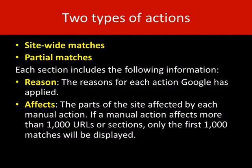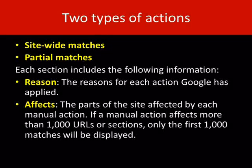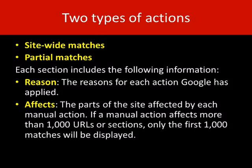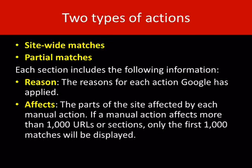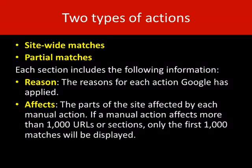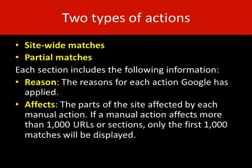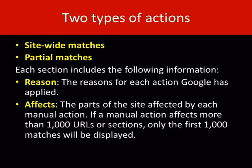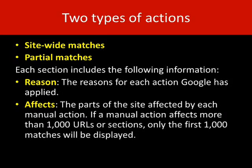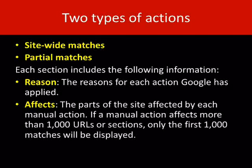There are two types of actions: Sitewide Matches and Partial Matches. Each section includes the following information — Reasons: the reasons for each action Google has applied, and Effects: the parts of the site affected by each manual action. If a manual action affects more than 1,000 URLs or sections, only the first 1,000 URLs will be displayed.